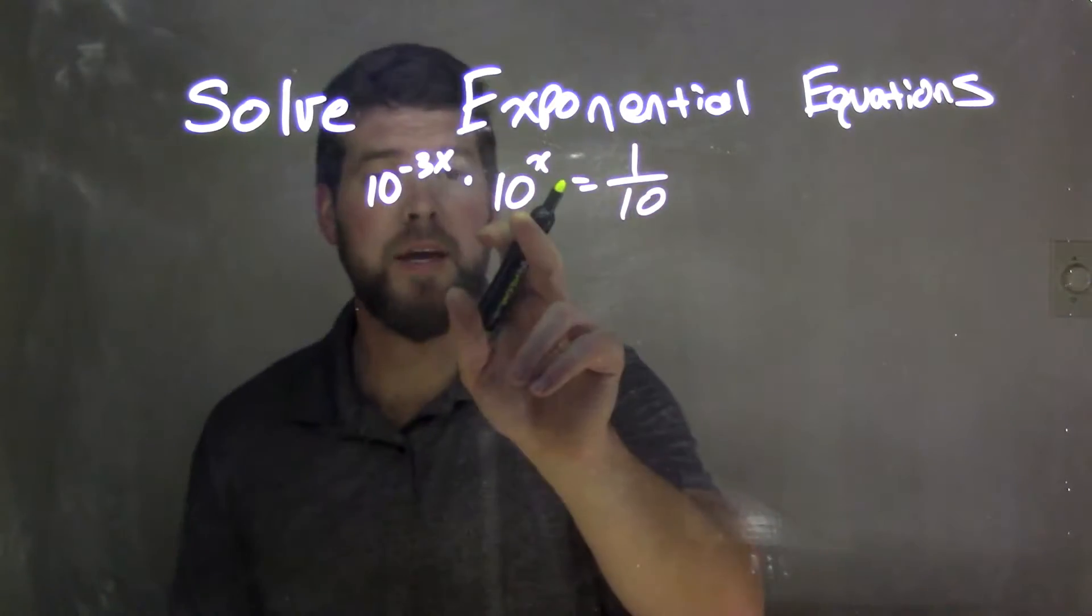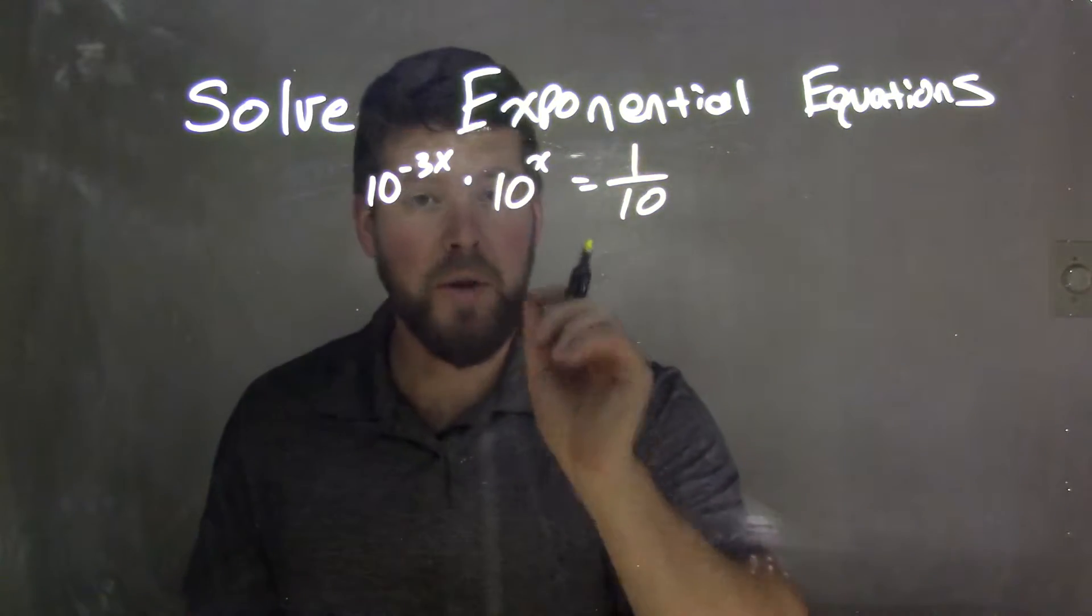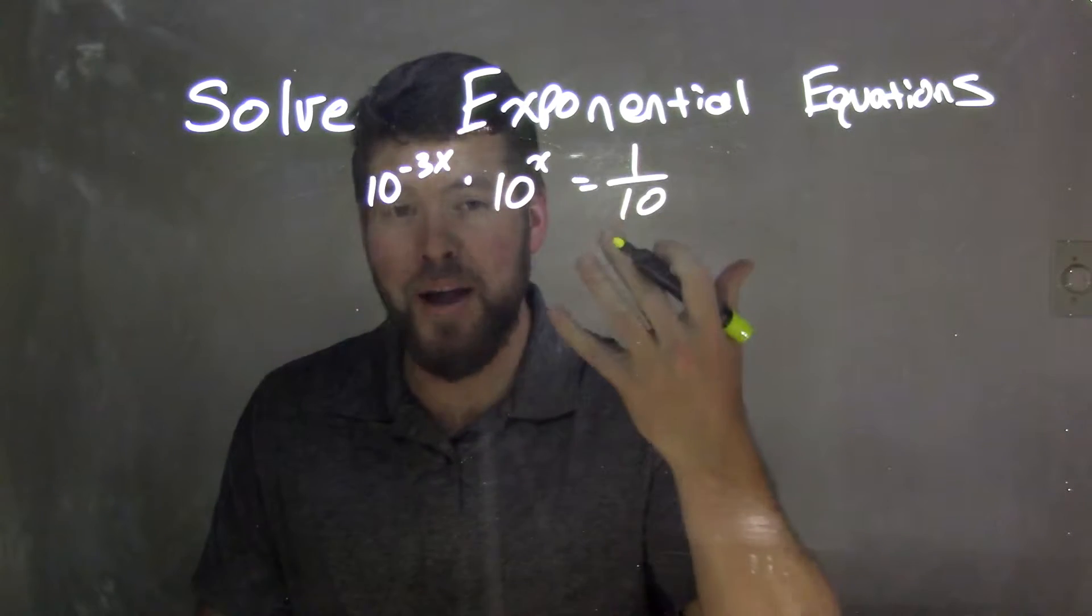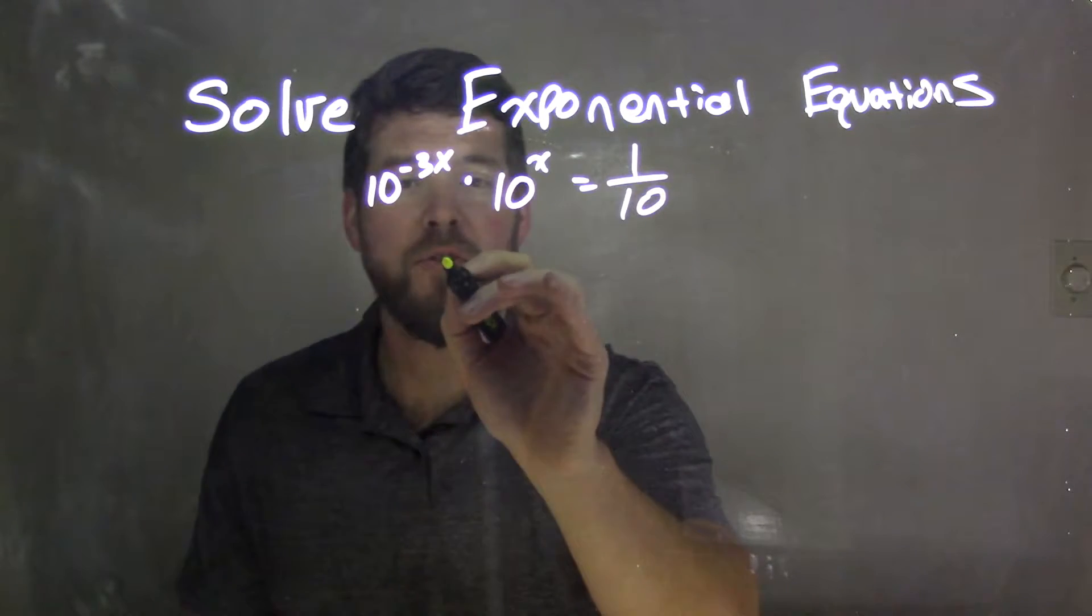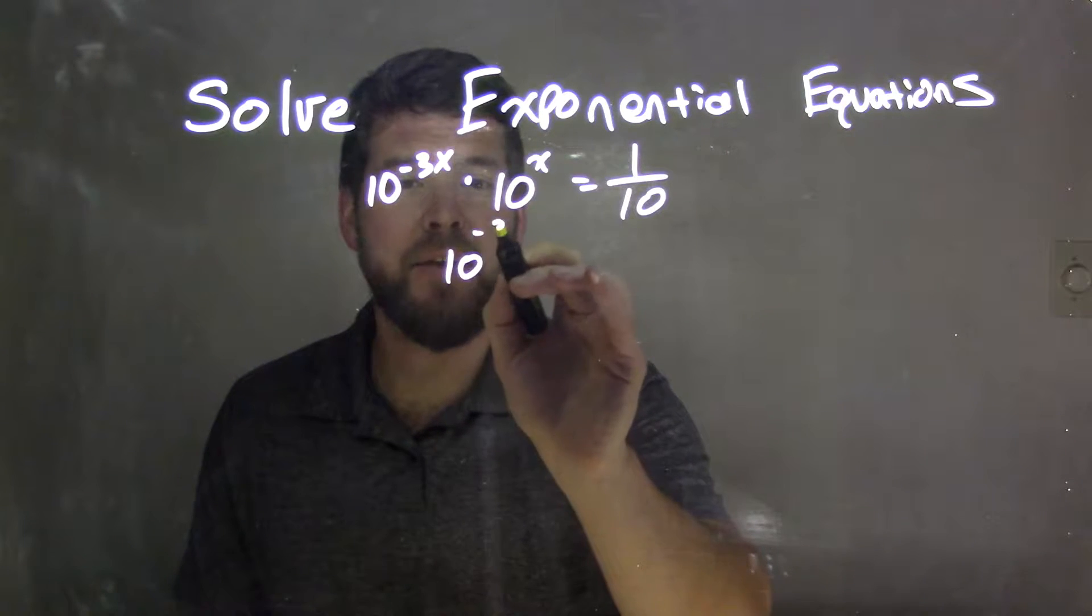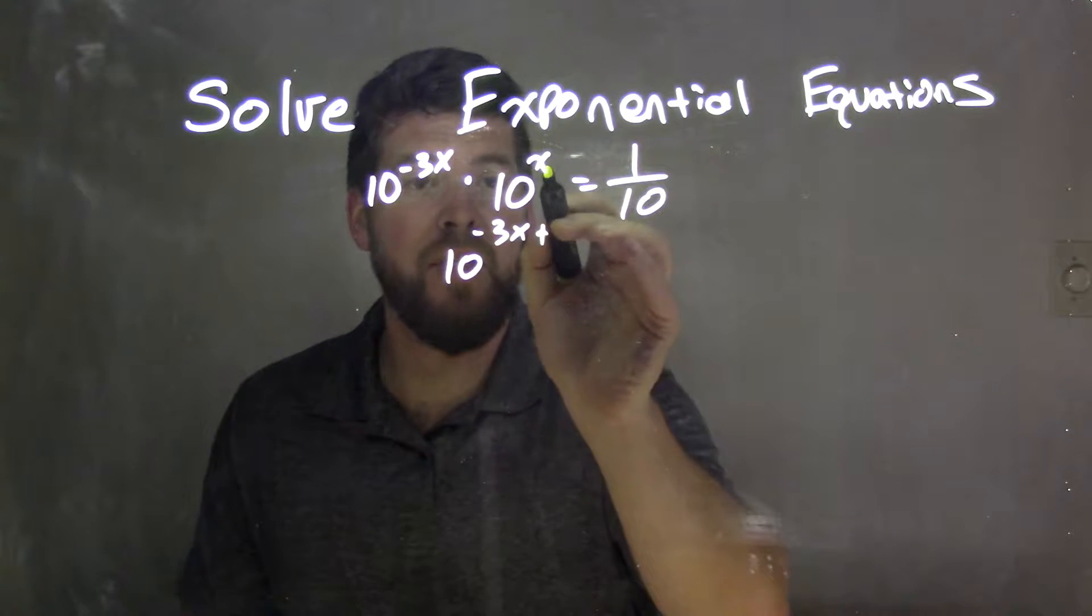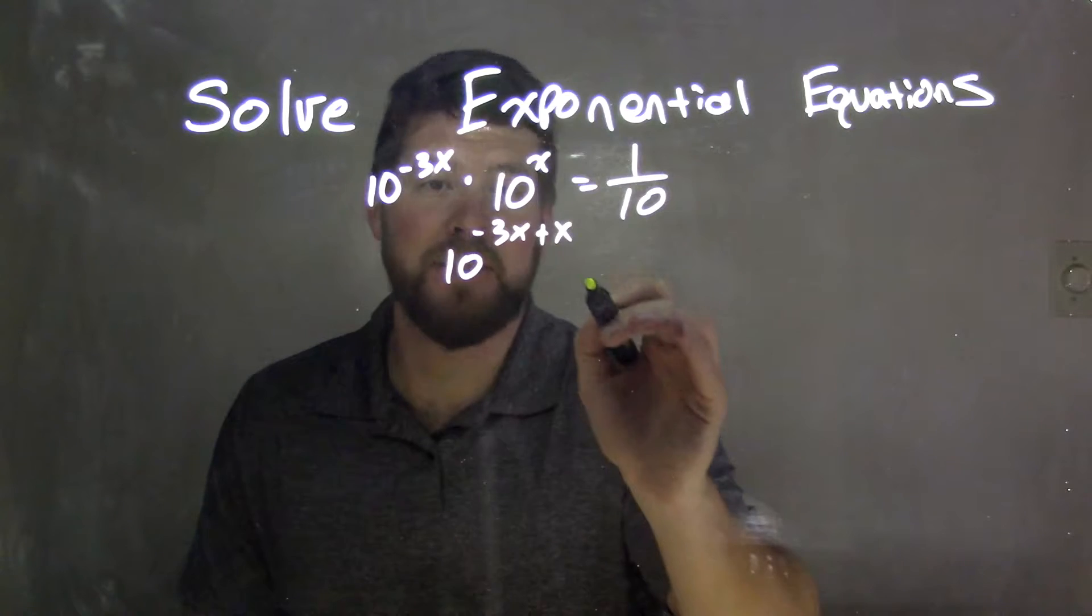Well, since we have multiplication here with the same base, we know all we have to do is add our exponents and keep the same base. So I can keep 10 down here, but now I can say -3x in the exponents plus this exponent right here, which is x.